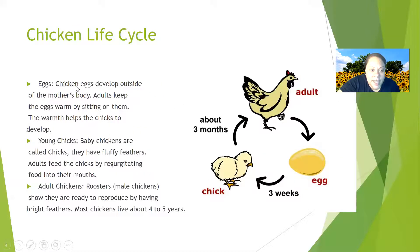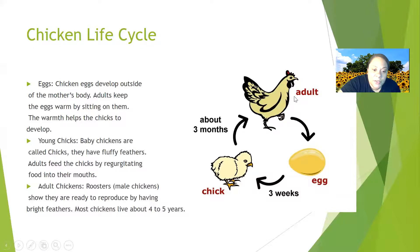Here's the chicken life cycle. First, the egg — chicken eggs develop outside of the mother's body, and adults keep the eggs warm by sitting on them. Then the young chick — baby chickens are called chicks, they have fluffy feathers, and adults feed them by regurgitating food into their mouths. Then the adult chicken — there are roosters, which are male chickens, and they show they're ready to reproduce by having bright feathers. Most chickens live four to five years.